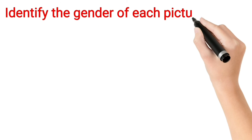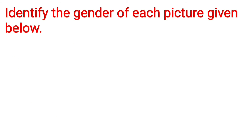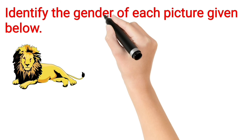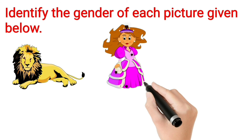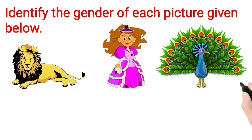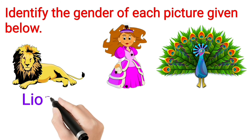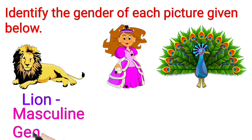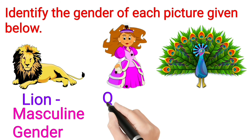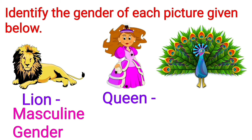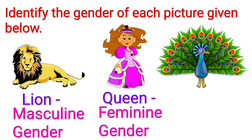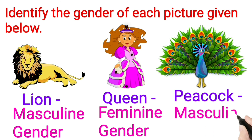Identify the gender of each picture given below. First one: Lion — Masculine Gender. Second one: Queen — Feminine Gender. Third one: Peacock — Masculine Gender.